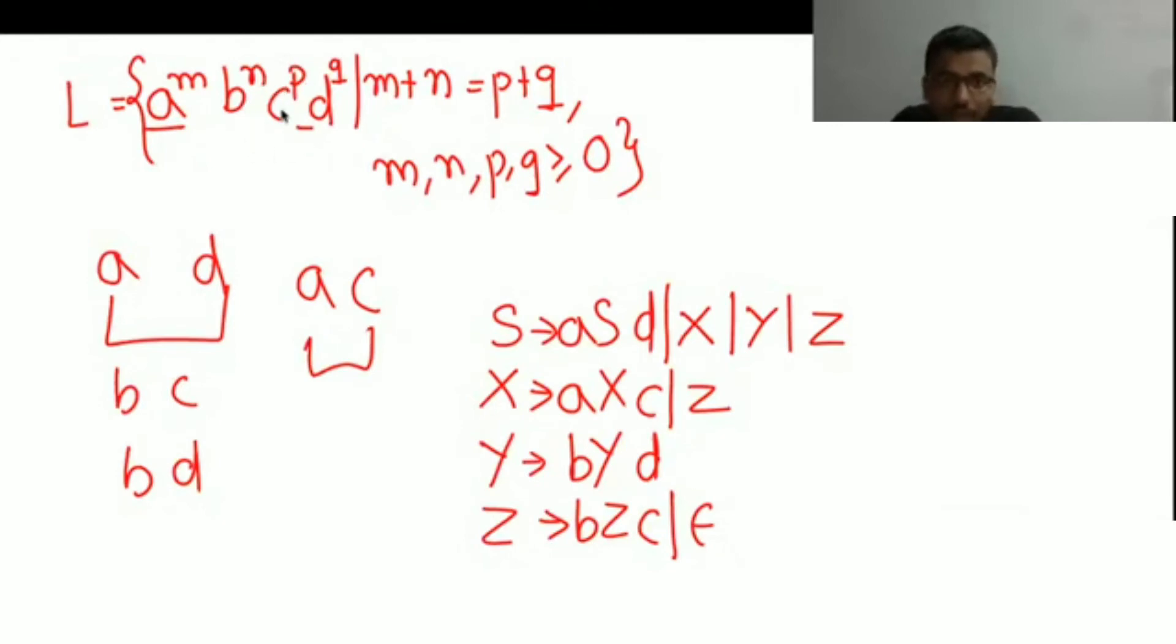Again, if you want to go inside, you will go generate BC. So BC is generated by Z. So either generate BD or Z, and if you want to generate epsilon, S will directly go to Z and Z will directly go to epsilon, you will get epsilon.